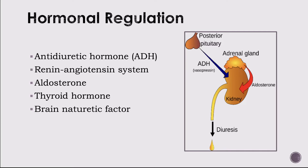Another factor in regulating fluid volume is hormonal regulation — antidiuretic hormone or ADH. Pressure sensors in the vascular system stimulate or inhibit ADH release from the pituitary gland. ADH causes the kidneys to retain fluid. If fluid volume in the vascular system is low, more ADH is released. If fluid volume or pressure increases, less ADH is released and the kidneys eliminate more fluid. ADH is also produced in response to a rise in serum osmolality, fever, pain, stress, and some opioid use.